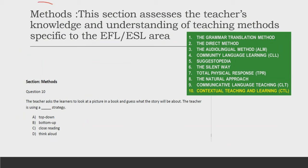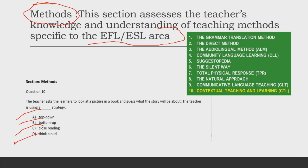The teaching methods section assesses the teacher's knowledge and understanding of teaching methods particularly related to English as a second language. A sample question: a teacher asks learners to look at a picture in a book and guess what the story will be about — the teacher is using which strategy? Is it a top-down method, bottom-up method, closed reading, or think-aloud method? According to the study guide, the answer is option A — the top-down strategy. We need in-depth knowledge of all current methods, new methods as well as traditional teaching practices, because questions can be asked from anywhere.